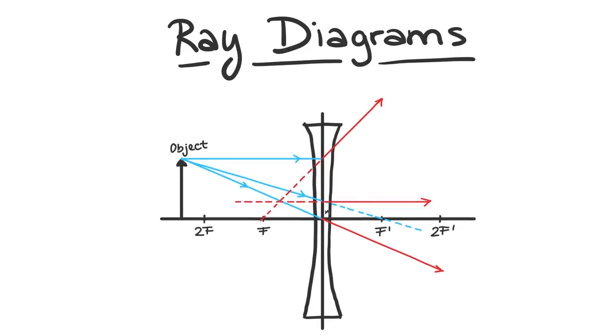The difference here is just which focal point we choose for step 3. It's the one in front of the lens, not the one behind. And so our image is also in front. The image is exactly where your refracted rays extension intersects with the line from step 1, the one through the center of the lens.